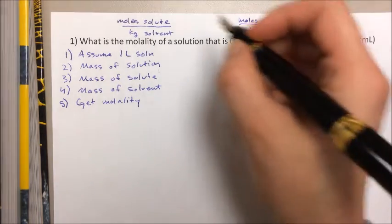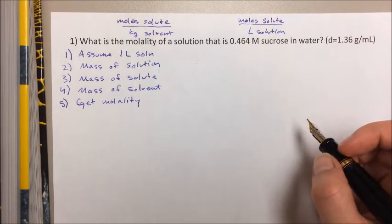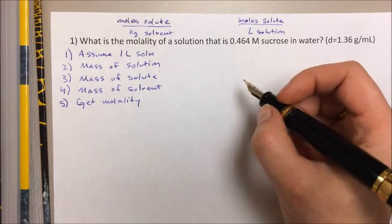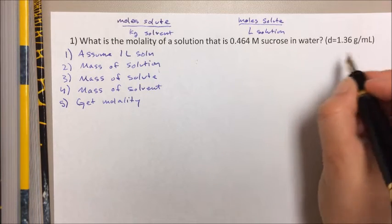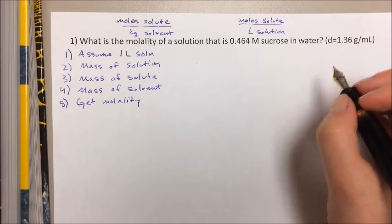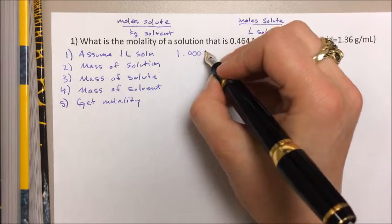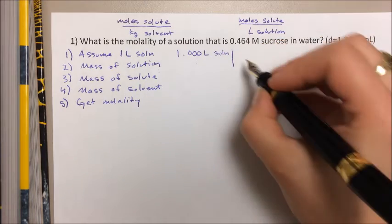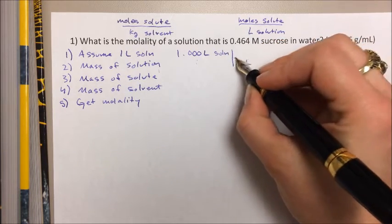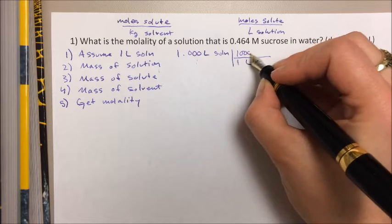So the first thing we're going to do, we're going to assume that one liter of solution. And with the density, we can convert that volume into a mass. So if we have one liter of solution, one liter is a thousand milliliters.